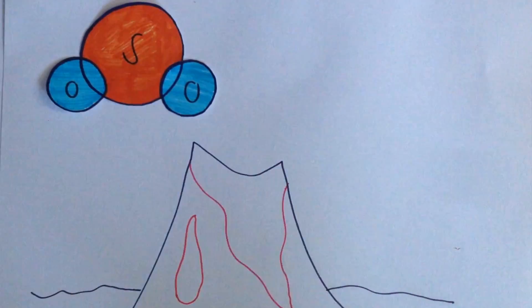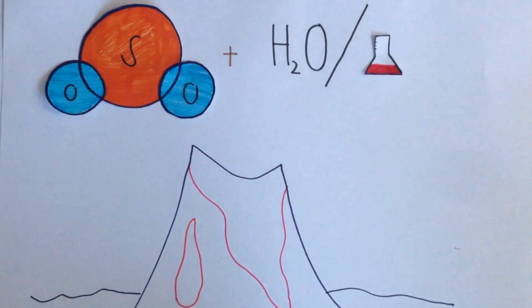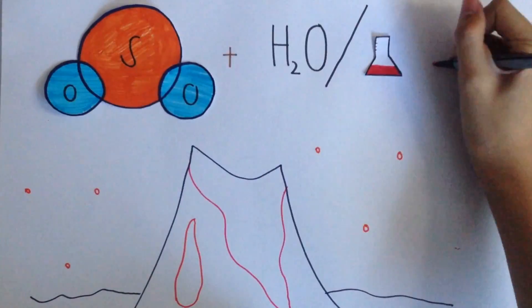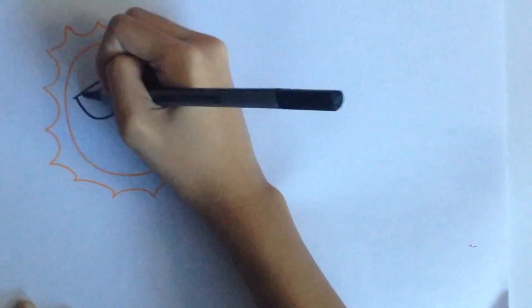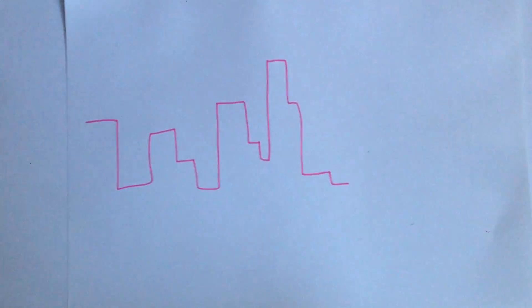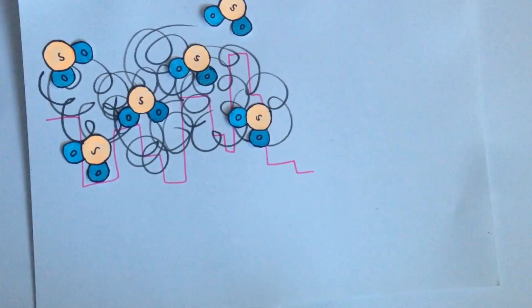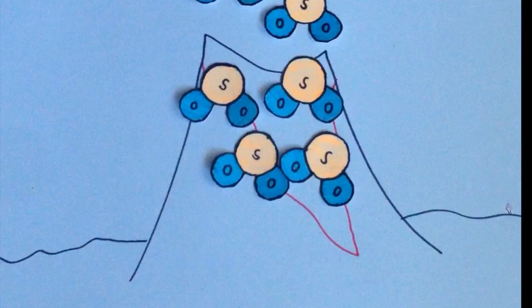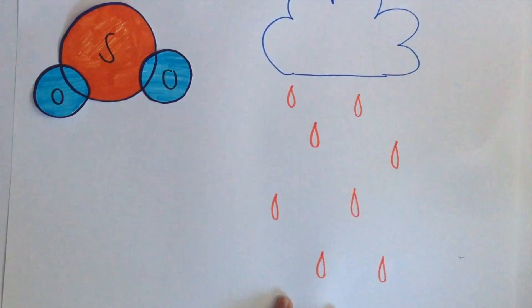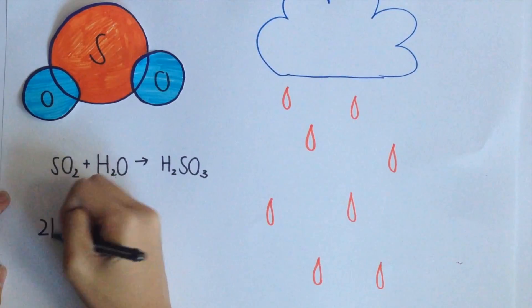What does sulfur dioxide do to our environment? Sulfur dioxide released from volcanic eruptions may react with water vapour and other chemicals in the atmosphere to form sulfur-based particles. These particles reflect the sun's energy back into space and temporarily cool the earth for periods ranging from a few months to years. Sulfur dioxide can also cause pollution and reduce visibility such as haze, just like the volcanic eruption of Iceland in April 2010. Sulfur dioxide is also involved in acid rain, where acidic pollutants such as sulfur dioxide react with water in the atmosphere and produce compounds with a pH value of 4 or less.